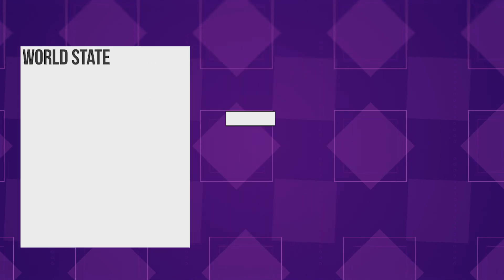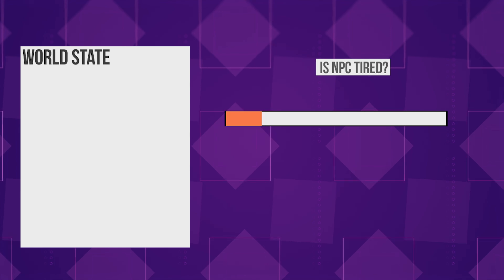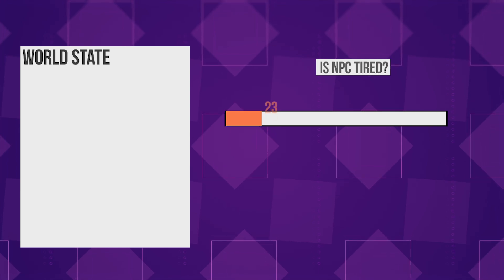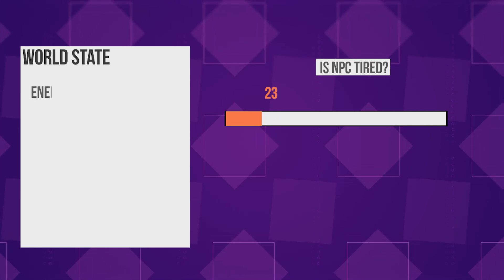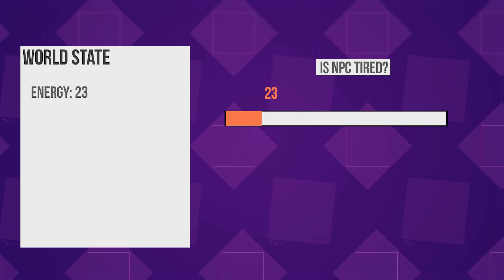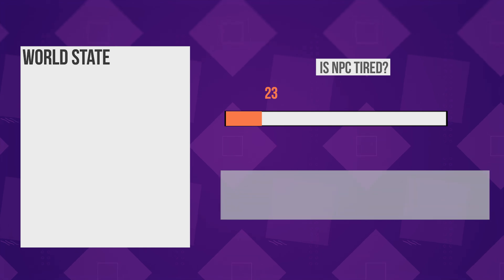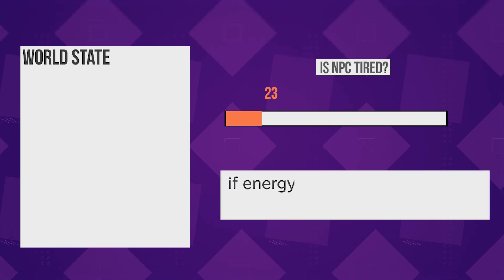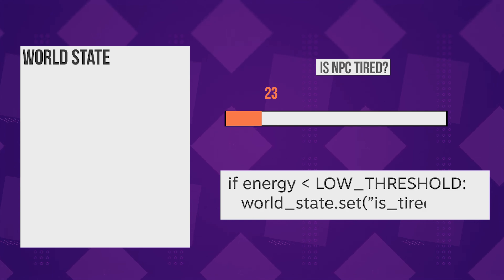So let's say your NPC has an energy meter and in your AI you just need to know if the NPC is tired or not. You could use the actual value from the meter and inside your AI check if it's below the threshold, but that would make things more complex and require constant recalculation. Instead, what is usually done is to make the comparison outside the AI and set to the world state only what's needed.